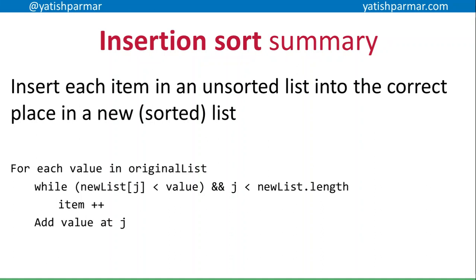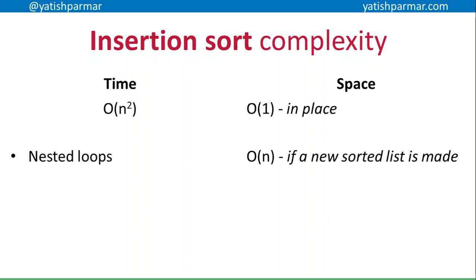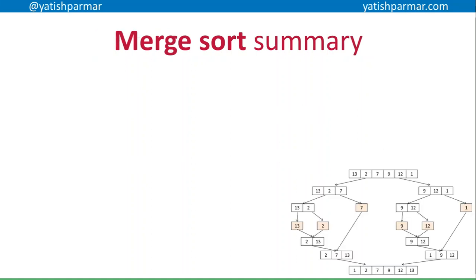With insertion sort, we're inserting each item from an unsorted list into a new sorted list in the correct position. Again, we've got nested loops, so it's O(n²). In terms of space, it's going to be O(1) if you have an in-place sort — you have a list and you're moving items around within it. However, it's going to be O(n) if you're creating a new list, because you're duplicating the amount of memory needed based on the number of items in that list.